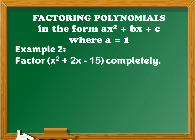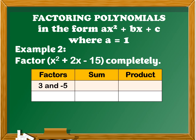For example, number 2: factor x squared plus 2x minus 15 completely. The constant term here is negative 15, meaning the signs of the factors are one positive and one negative. Factors of 15 include 3 and negative 5, or negative 3 and 5. The sum of 3 and negative 5 is negative 2, and the sum of negative 3 and 5 is positive 2. The product of 3 and negative 5 is negative 15, and the product of negative 3 and 5 is also negative 15.